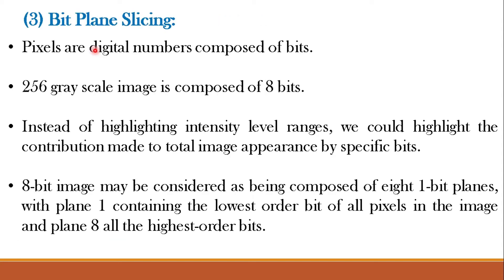A digital image is made up of pixels and these pixels are digital numbers composed of bits. A 256 grayscale image is composed of 8 bits. The grey level of each pixel is stored as one or more bytes in a computer. For an 8-bit image, 0 is encoded as 8 zeros whereas 255 is encoded as 8 ones. The bit on the far left is referred to as the MSB or most significant bit because a change in that bit significantly changes the encoded value. Conversely, the bit on the far right is the LSB or least significant bit because a change in it does not change the grey level value much.